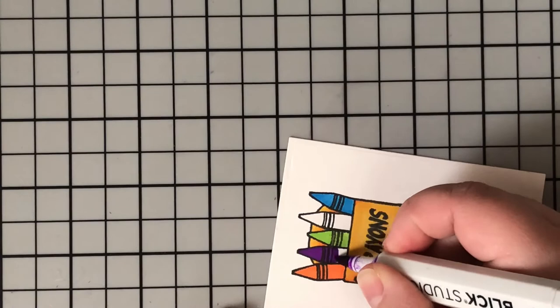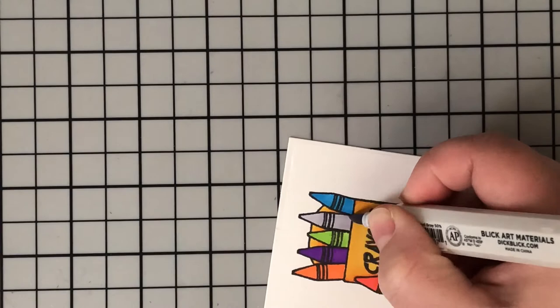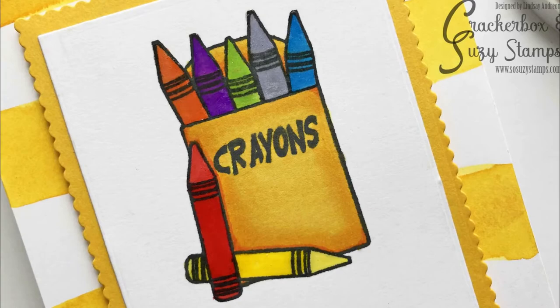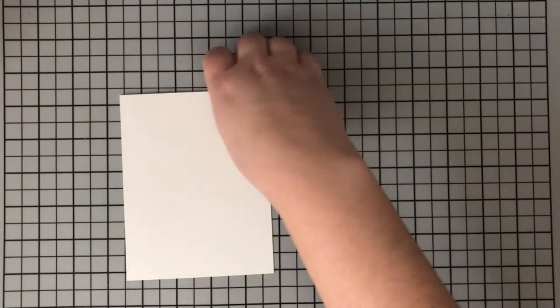So I used a red, a yellow, an orange, green, a blue, a purple, and then I'm going to come in with a gray as well to finish off that box of crayons. Super super simple and easy to do.